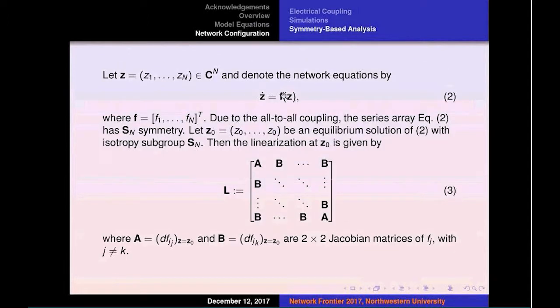We complexify the network equations. We group them together in a standard form. We can show that there is a common equilibrium Z_0 N times. As I mentioned, the isotropy subgroup for this solution is just S_N that comes from the all-to-all coupling.